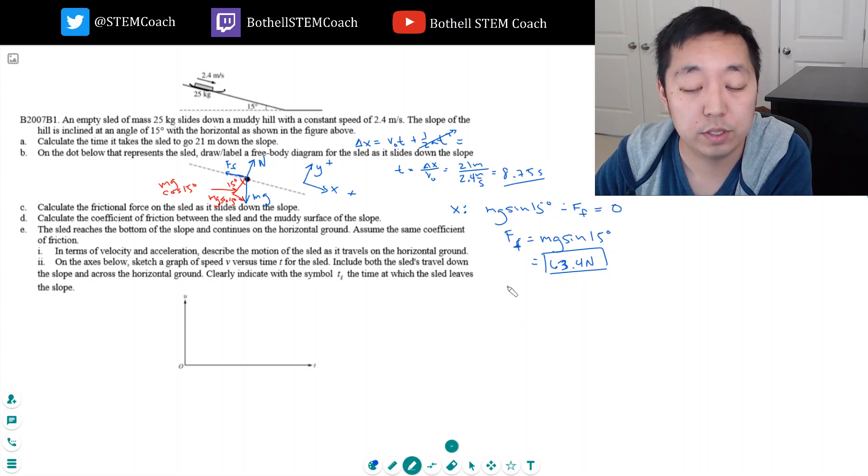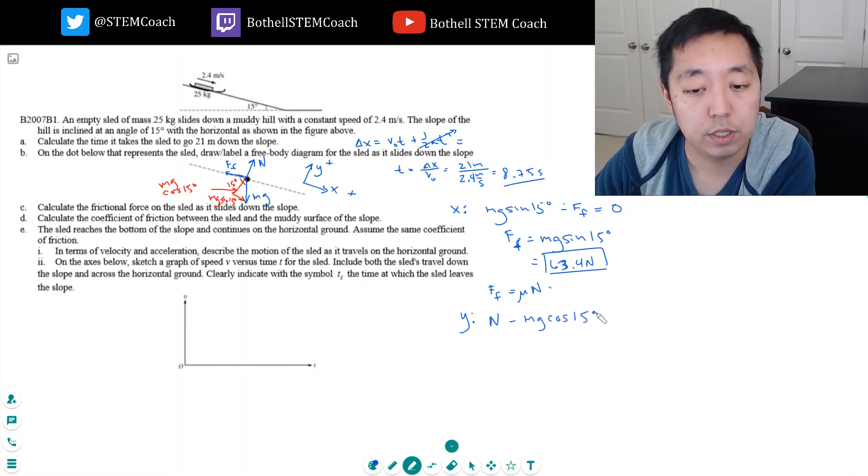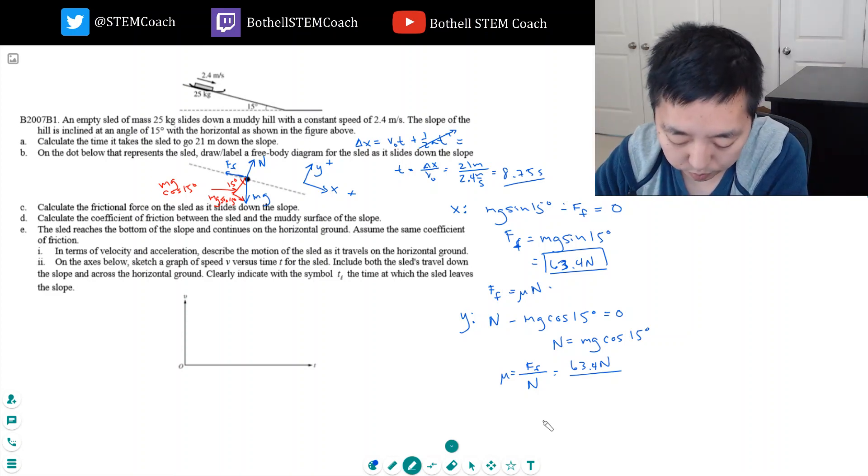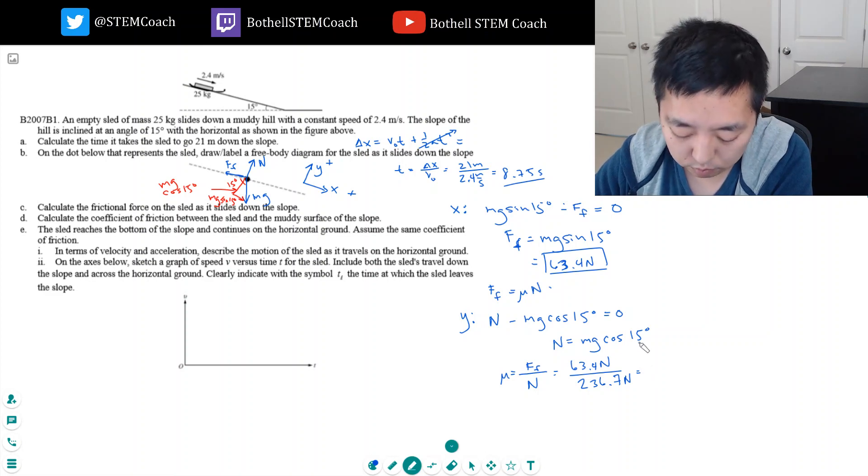Okay, calculate the coefficient of friction between the sled and the muddy surface. Now we know the force of friction equals mu times the normal force. We haven't solved the normal force, and that requires looking on the free body diagram in the y direction. I have N minus gravity in the y direction, which would be mg cosine 15 degrees. That has to equal zero, so the normal force equals mg cosine 15 degrees. And then mu would equal the force of friction divided by the normal force. So I know the force of friction - that's 63.4 newtons - and mg cosine would be almost the same thing as the previous one, but instead of sine I do cosine. This is 236.7 newtons, and so this ratio would be 0.27.